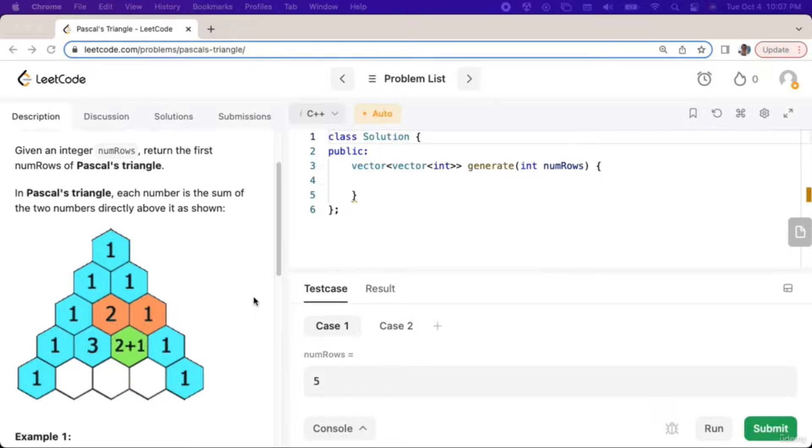In Pascal's Triangle, each number is the sum of the two numbers directly above it, as shown here.